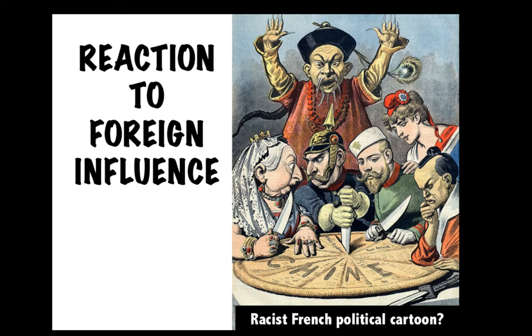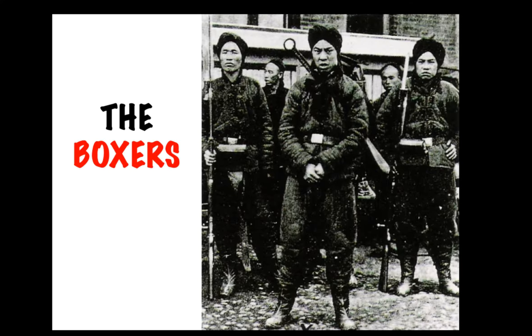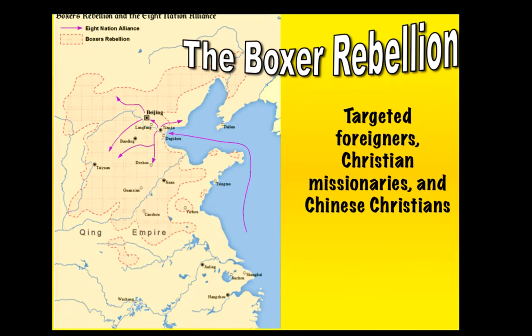The most famous group to oppose foreign influence in China were the Boxers. The Boxers were tired of their country being exploited by the rest of the world and were resentful over the presence of Christian missionaries. They got the nickname the Boxers due to their reliance on martial arts. This resentment spilled over into an open rebellion known as the Boxer Rebellion. During the rebellion, members of this secret society known as the Boxers killed foreigners, Christian missionaries, and even Chinese civilians who had converted to Christianity.